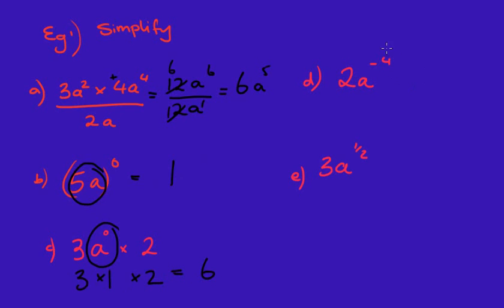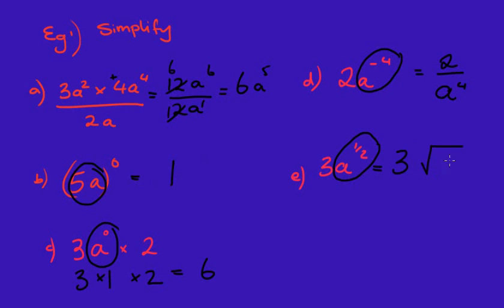For d: the negative 4 is only working on the a, so I've got 2 over a to the power of 4. The last question: the power of a half is only working on the a, so I've got 3 times the square root of a — you can write a little 2 and a 1 in the root sign but at this stage I'd prefer if you didn't.